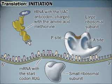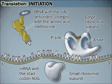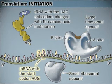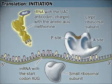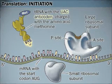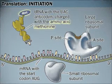Translation is RNA-directed polypeptide synthesis. An initiation complex forms at the start codon of the mRNA. The complex consists of the messenger RNA, a tRNA with the complementary anticodon, charged with the first amino acid — always methionine — and the small ribosomal subunit.